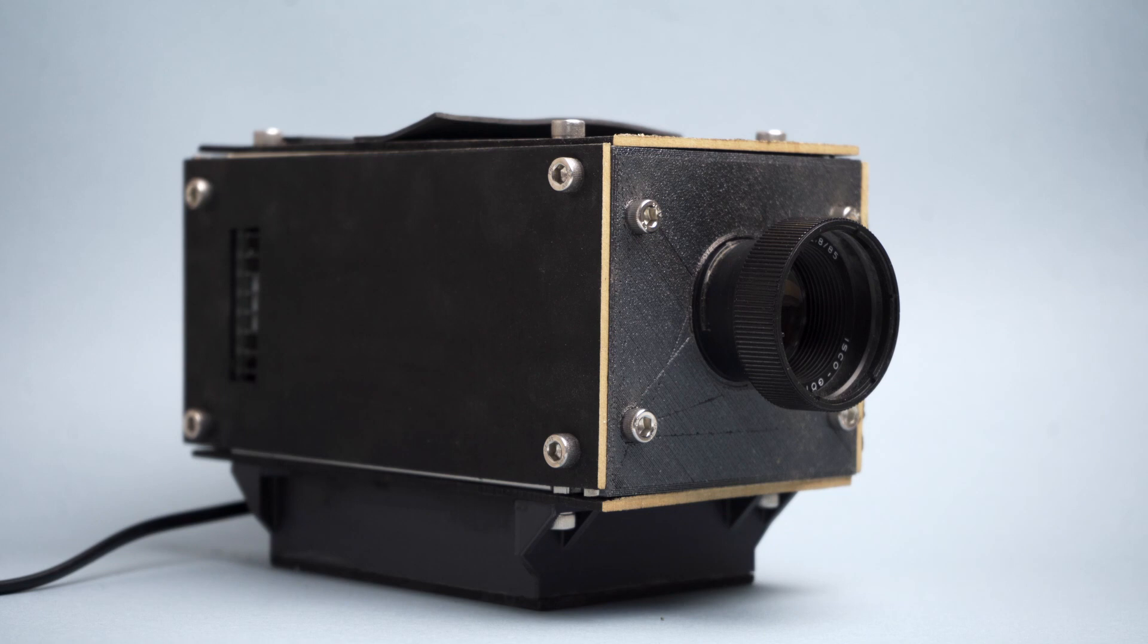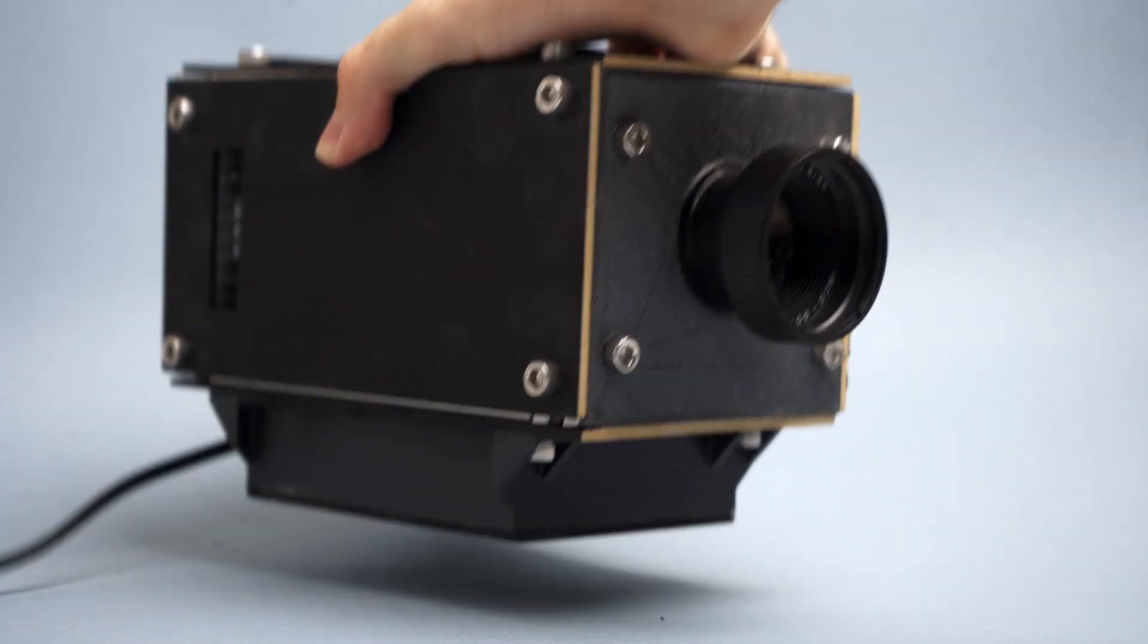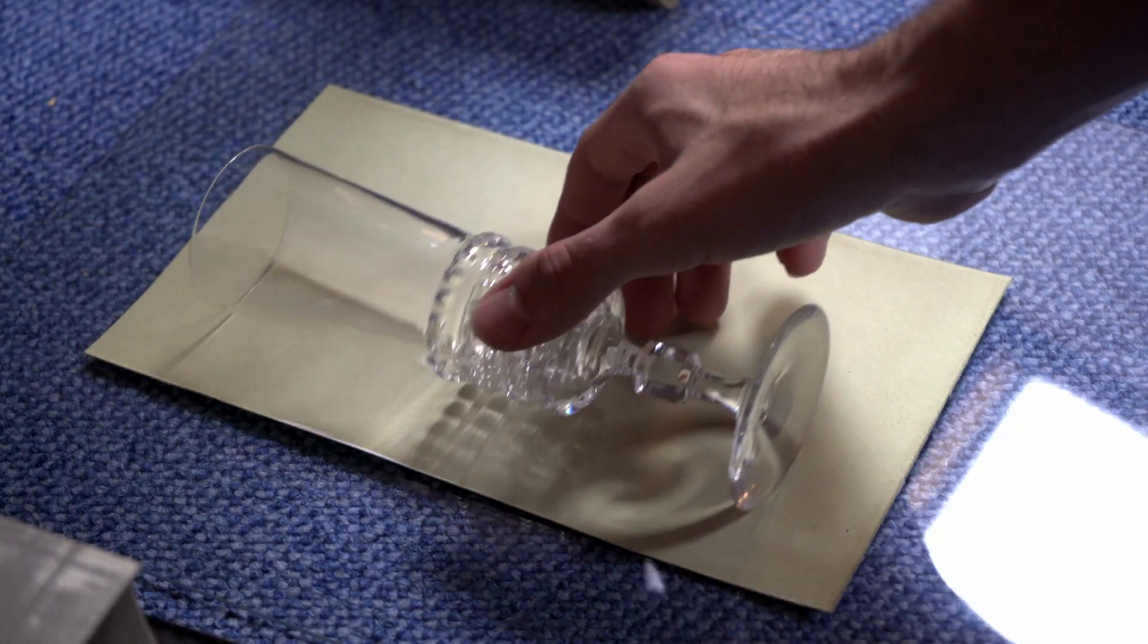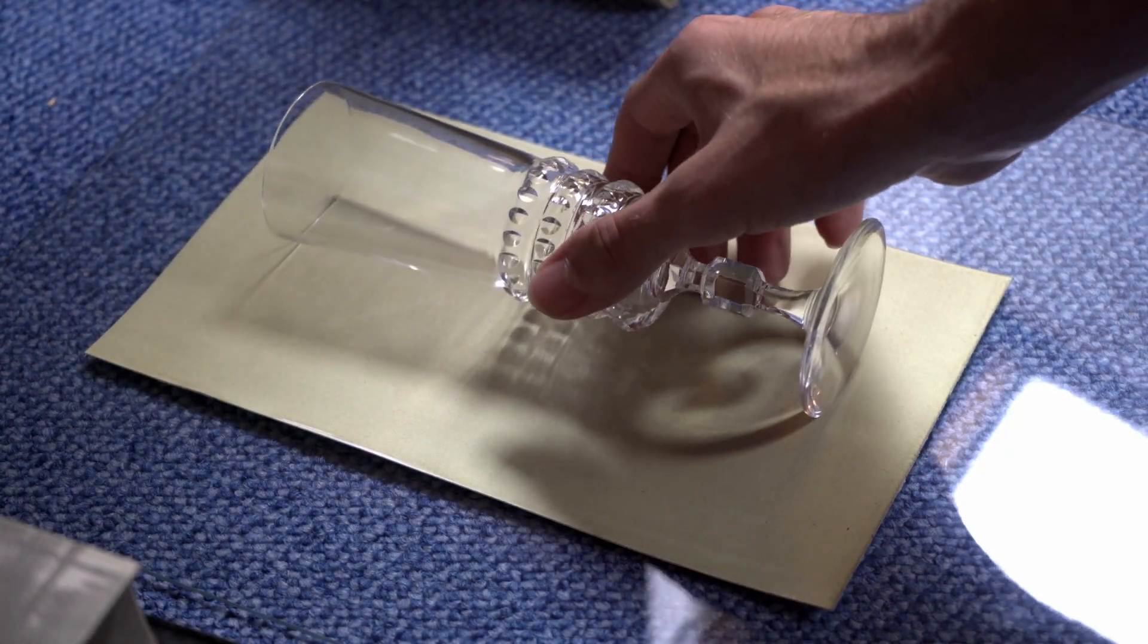So after I built this thing, let me now show you how to create cyanotype photograms. As with every other cyanotype, you start by positioning your subject on your coated paper.